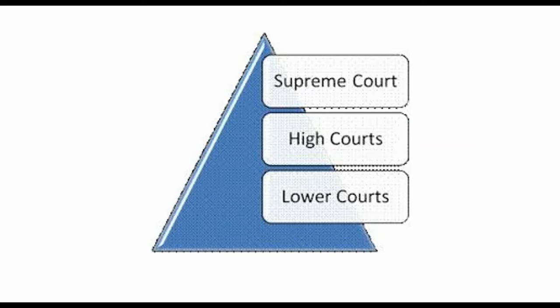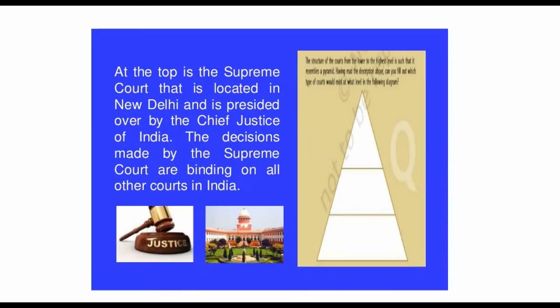There are several courts at the lower level while there is only one at the apex level. At the top is the Supreme Court, located in New Delhi, presided over by the Chief Justice of India. The decisions made by the Supreme Court are binding on all other courts in India. Each state has a High Court which is the highest court in that state. And then we have at the Tehsil or district level the subordinate courts, which are what most people interact with.